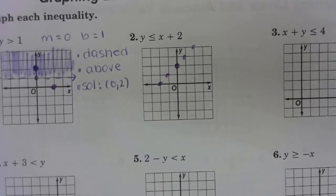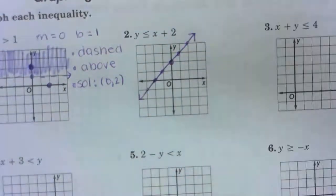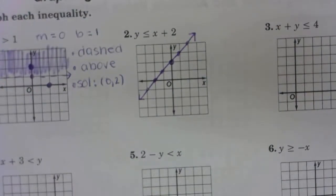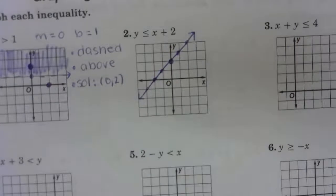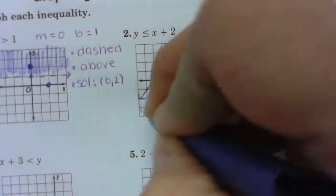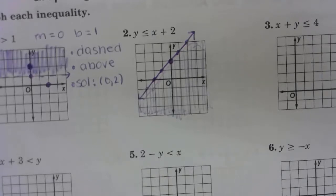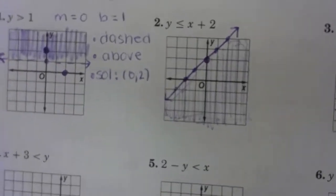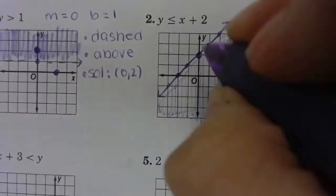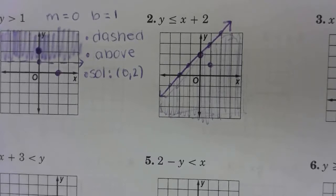Aaliyah, is my line solid or dashed? Excellent. And then Emma, do I shade above or below? Perfect. So we're going to shade below because y is less than. Okay. And then Dylan, can you give me a solution to this graph? A solution to the graph of number two. Excellent. One, one is a solution because it is in my shaded region. Very good.